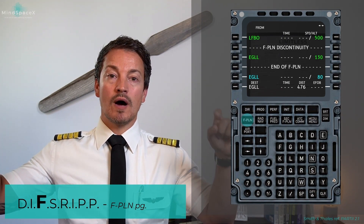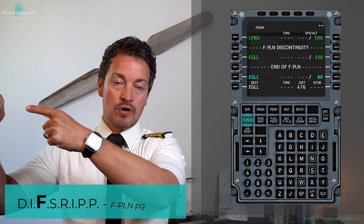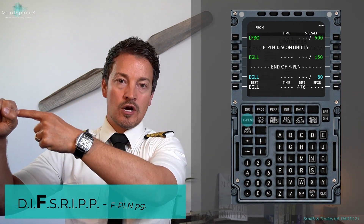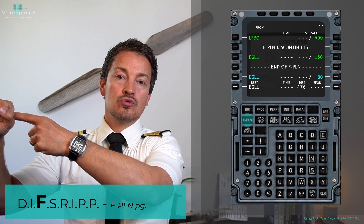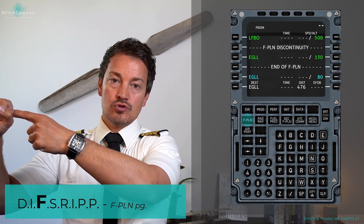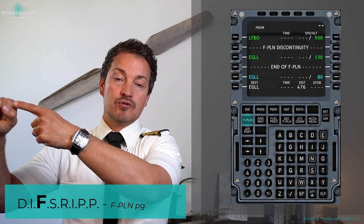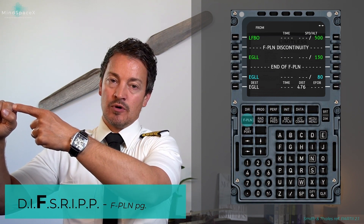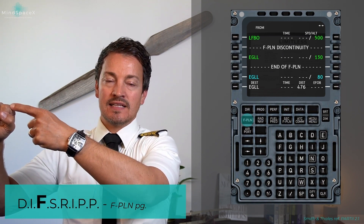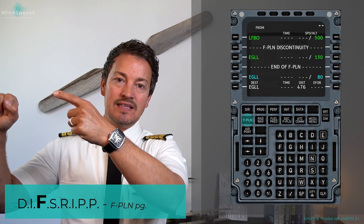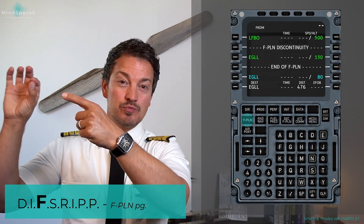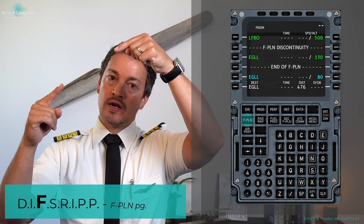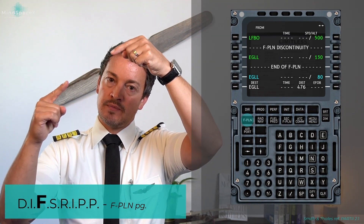We will then go to our arrival airport, our destination. We will select what runway we choose or expect to use, the approach, and any STAR that might be applicable. Once we have selected that, we will connect the first point of that approach or that STAR with the last point on our in-route segment.